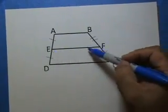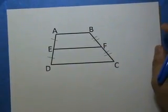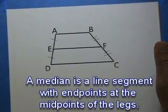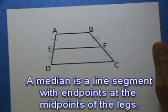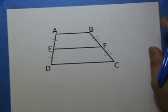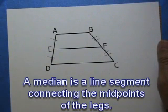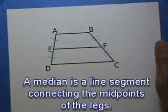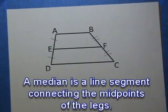Segment EF is a median. A median is a line segment with endpoints at the midpoints of the legs. That's one definition. Another definition. A median is a line segment with endpoints at the midpoints of the legs. Whichever one you like.